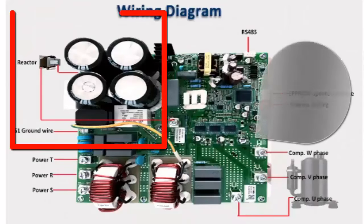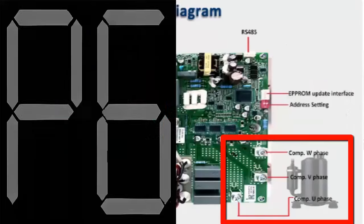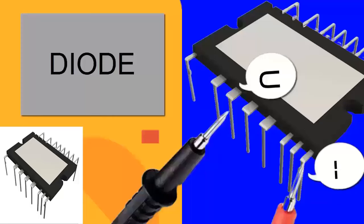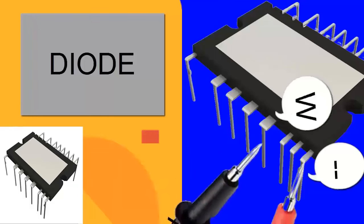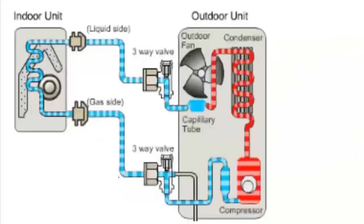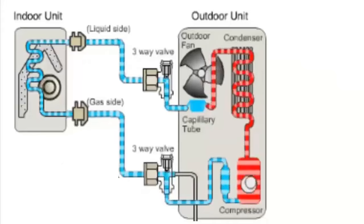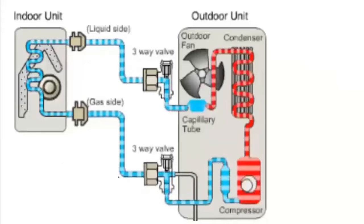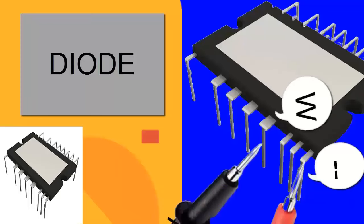3. If the problem isn't found in the compressor or the wiring, the next step is to check the condition of the intelligent power module, IPM. A. Ensure the unit is completely disconnected before proceeding. B. Set your multimeter to the diode test mode, and identify the model number of the IPM module to correctly recognize the terminals.